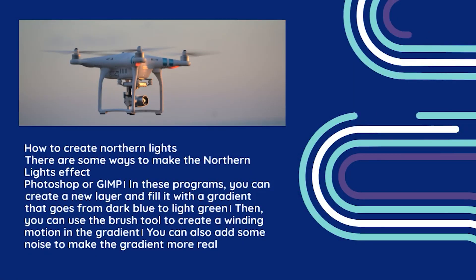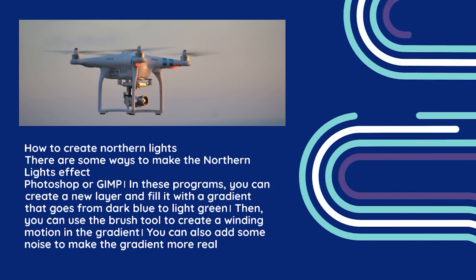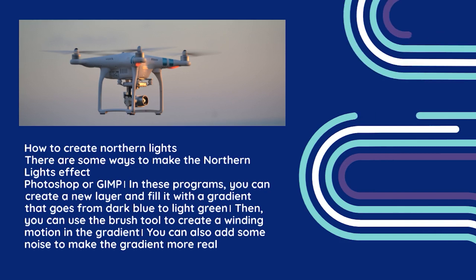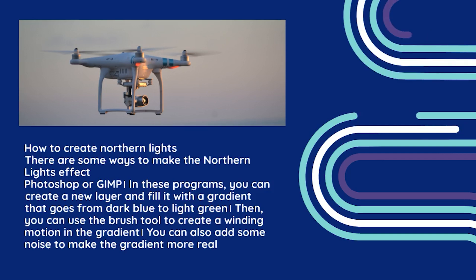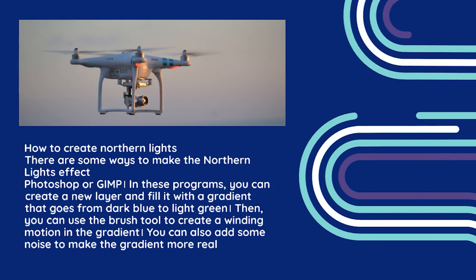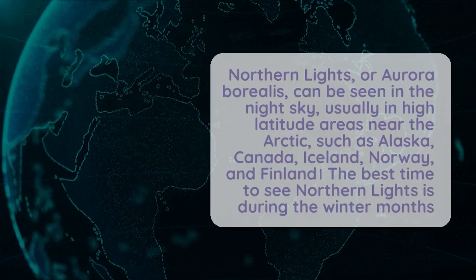To create a Northern Lights effect digitally, there are some ways. One way is to use software programs like Photoshop or GIMP. In these programs, you can create a new layer and fill it with a gradient that goes from dark blue to light green. Then, you can use the brush tool to create a winding motion in the gradient. You can also add some noise to make the gradient more realistic.